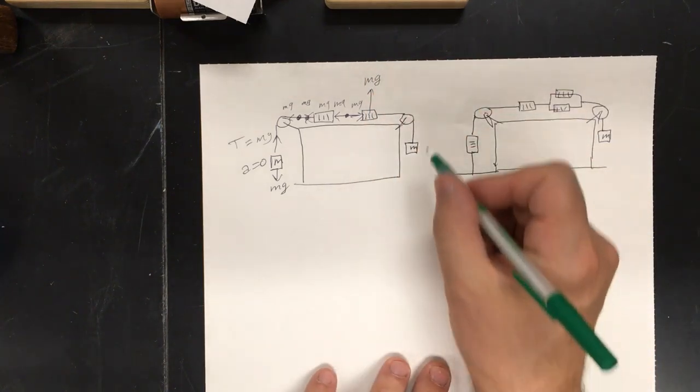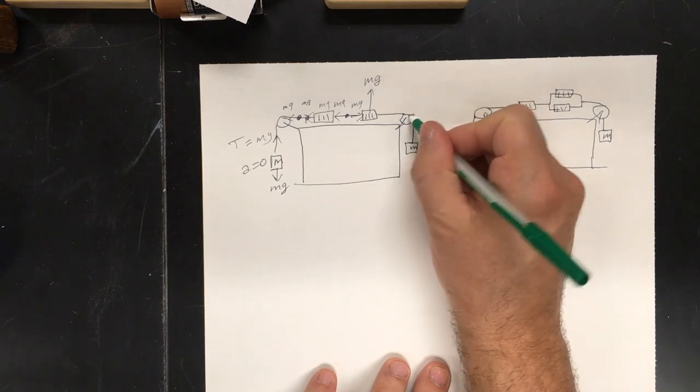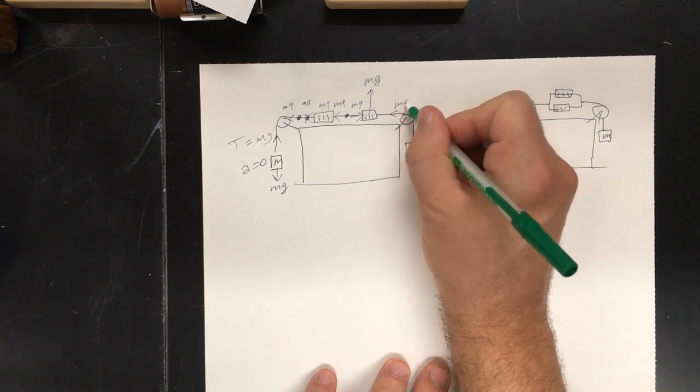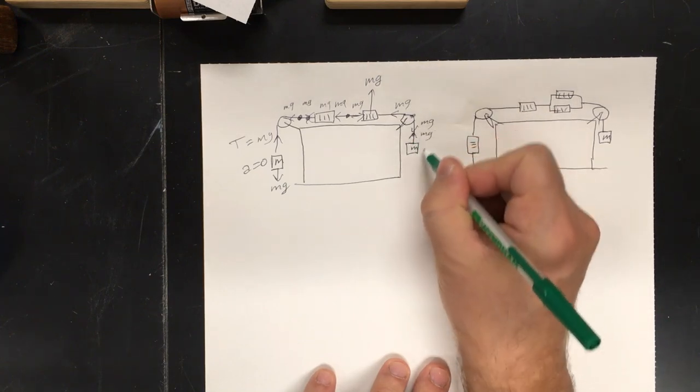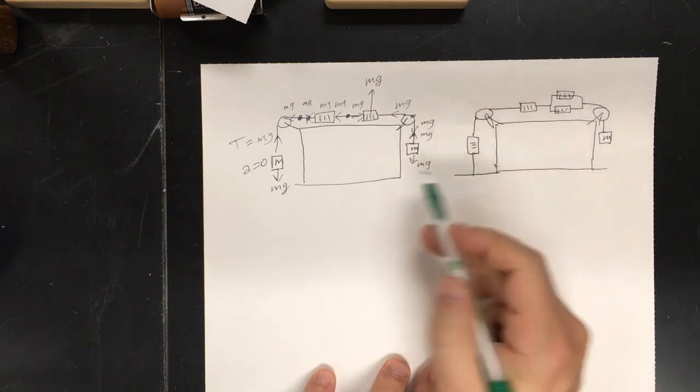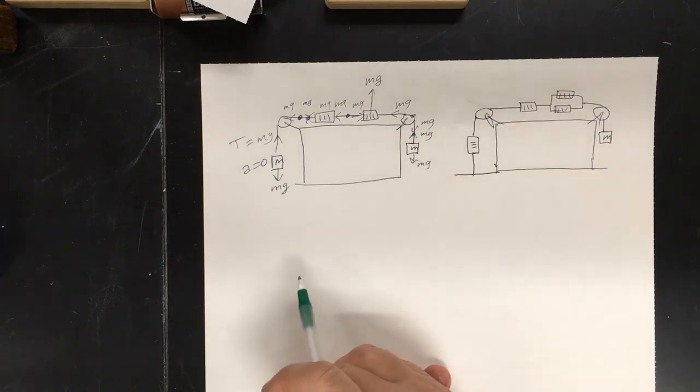You keep following that all the way around. If we take this point right here, then that must be mg, this must be mg. We take this point right here, mg, mg. The tension in the rope everywhere is mg.